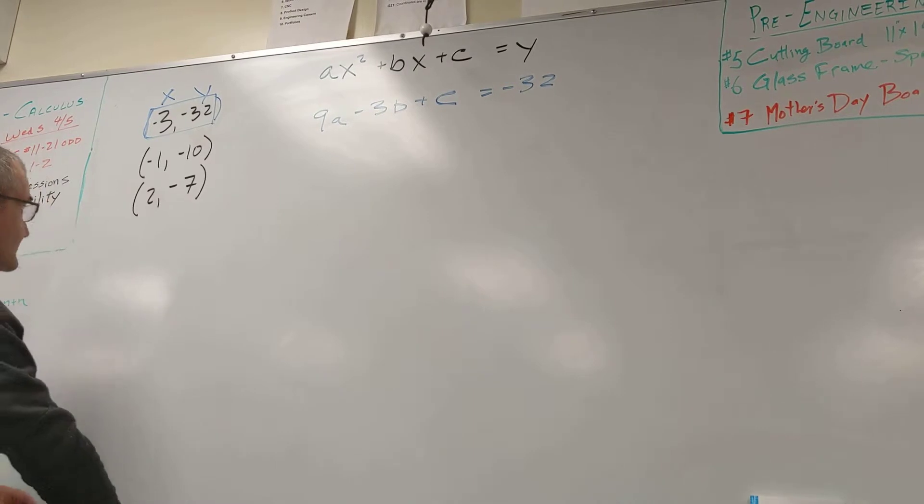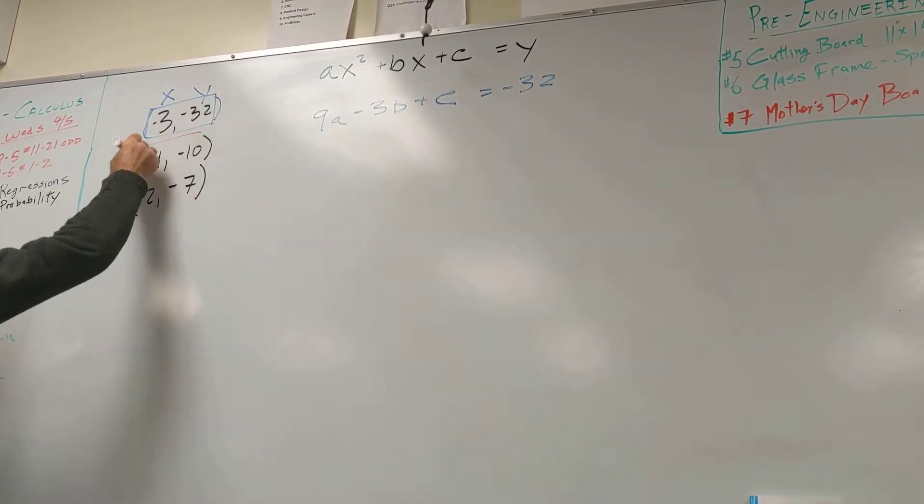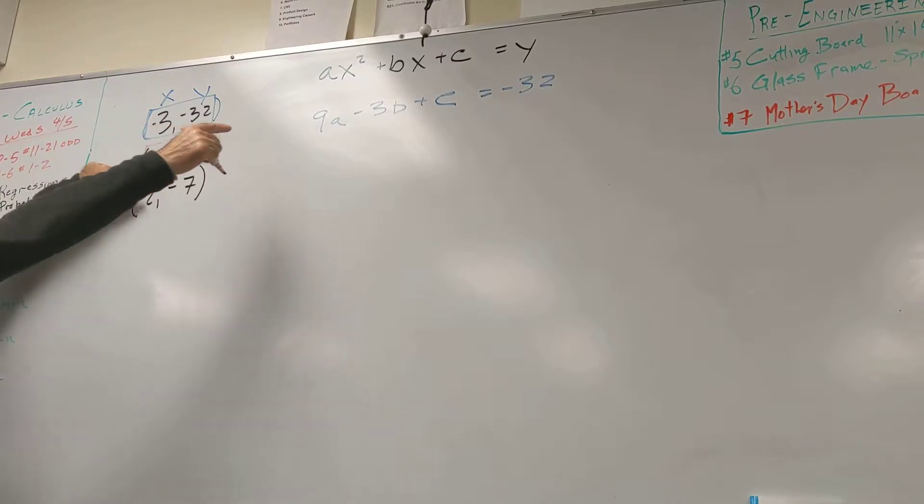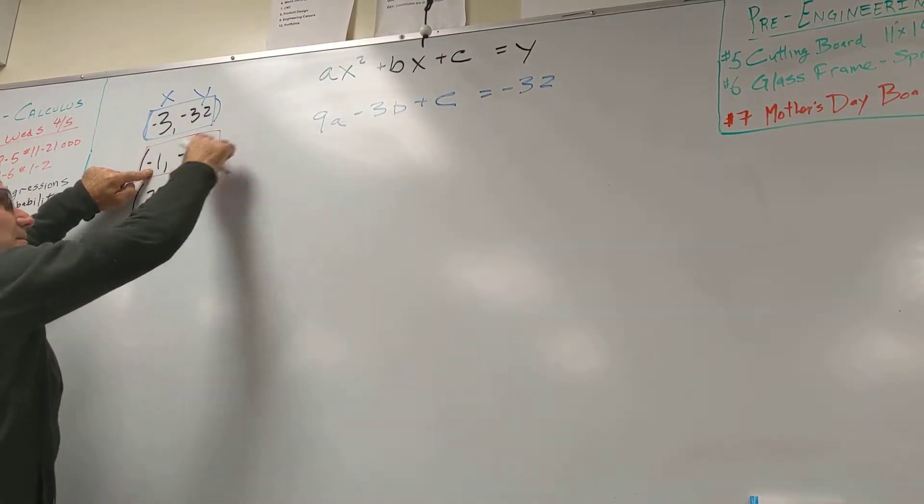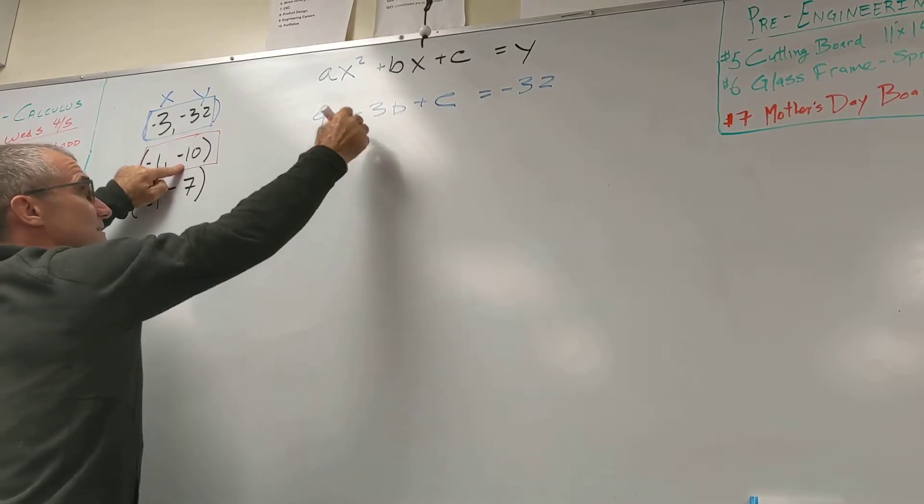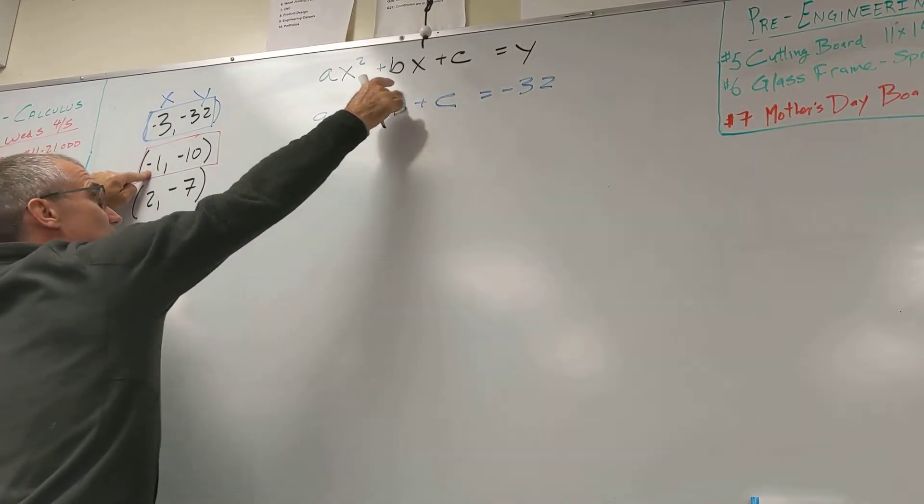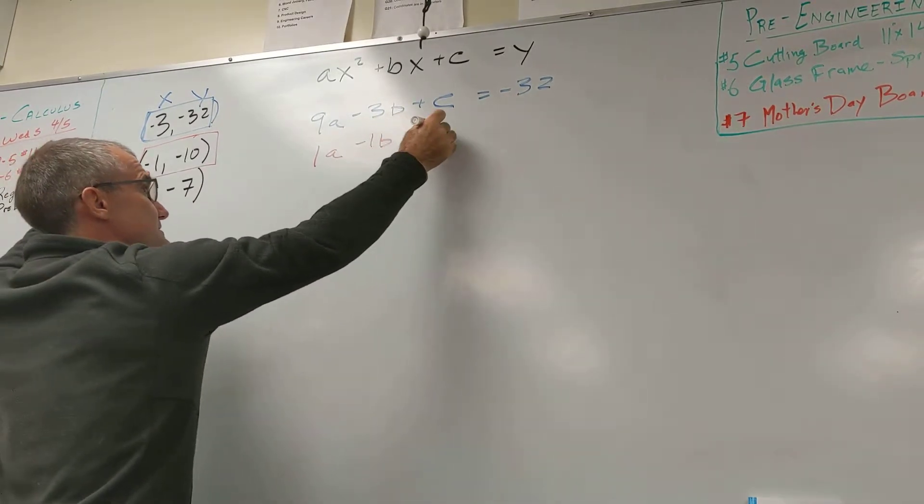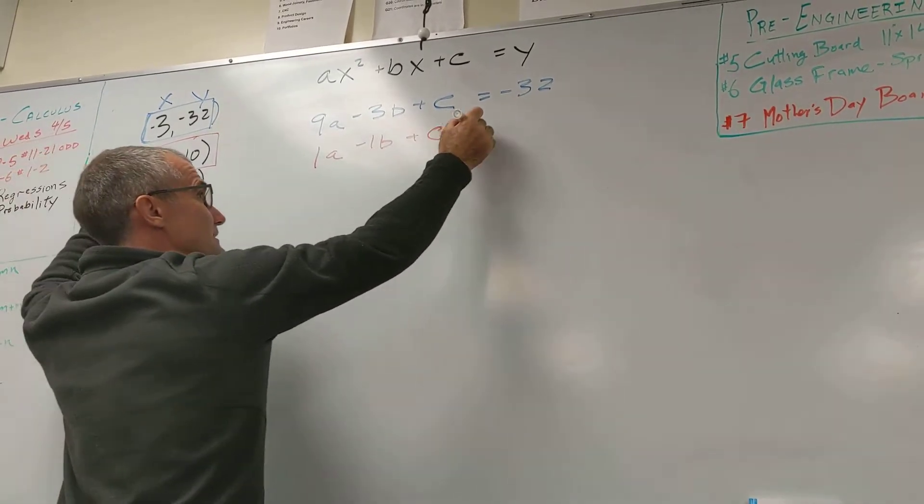Then my second equation I'll do in red. So I'm going to take this coordinate right here in red. For every x value, I'm going to plug it in for x. So I have 1 squared times a, 1a, negative 1 times b plus c equals y, negative 10.